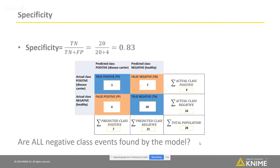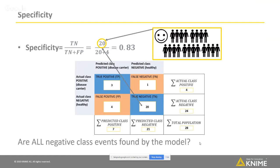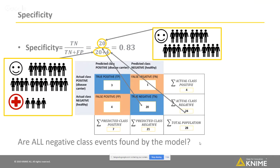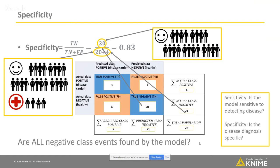The pair of sensitivity is specificity, which measures exactly the same as sensitivity but for the negative class — how good the model is in detecting all negative class events, all healthy people in this case. We calculate specificity by dividing the number of true negatives by the number of all negative class events in the data — those predicted correctly and those predicted incorrectly as disease carriers. For this model, the specificity value is 0.83, which means that more than 80% of the healthy people were predicted correctly by the model. As a summary: sensitivity tells how sensitive the model is to detecting the disease, and specificity tells if the disease diagnosis is specific.